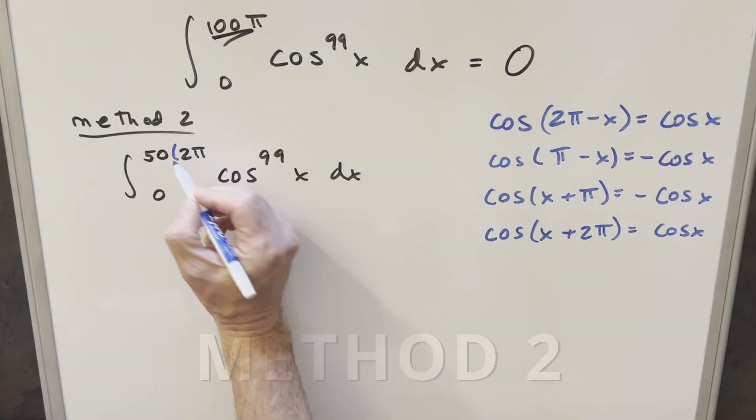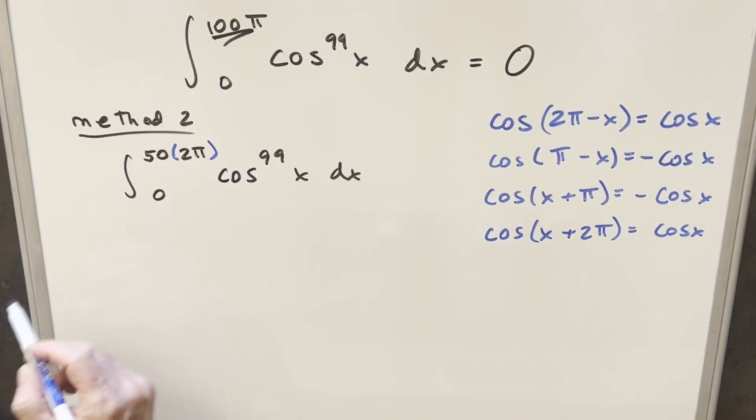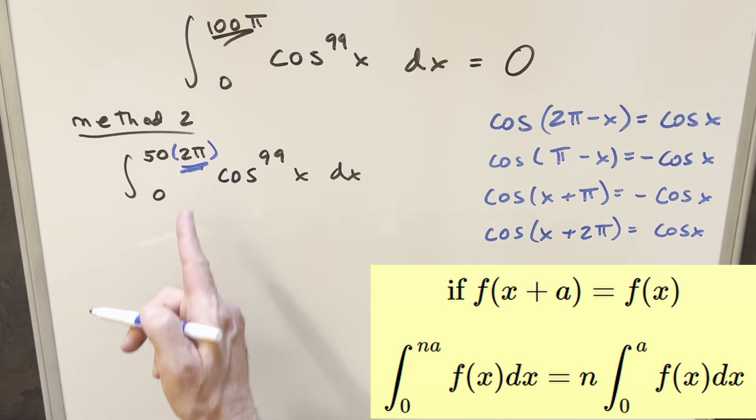Now method number two, what I've done is I just rewrote our integral, but I split up 100 pi and wrote it as 50 times 2 pi because then I can use this formula where our n value in front is going to be 50, our a value is going to be 2 pi.